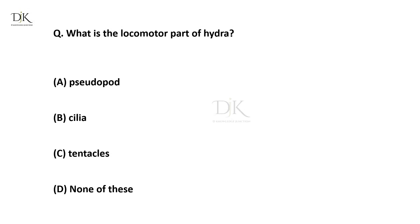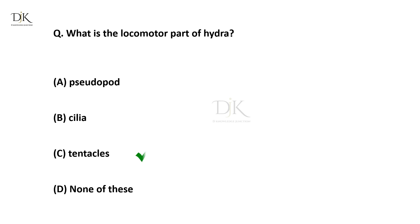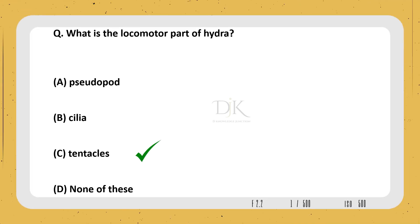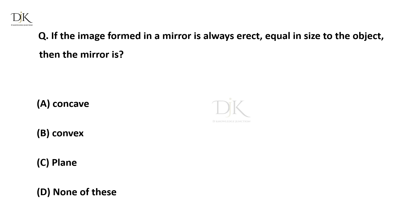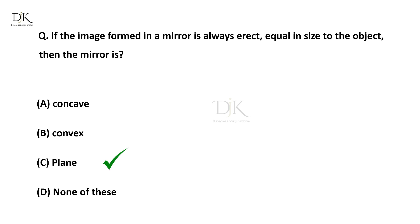What is the locomotor part of Hydra? The right answer is Tentacles. If the image formed in a mirror is always erect and equal in size to the object, then the mirror is? The right answer is Plane mirror.